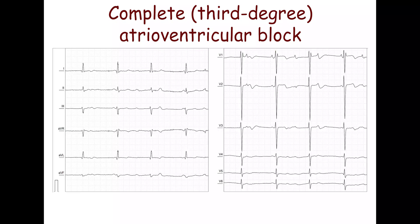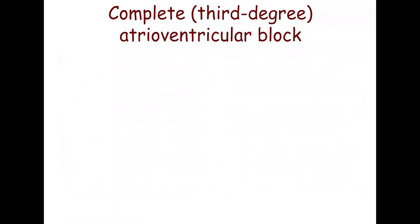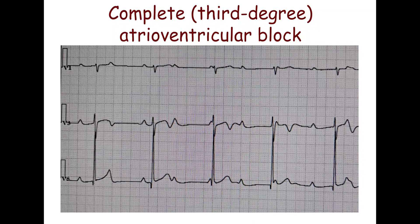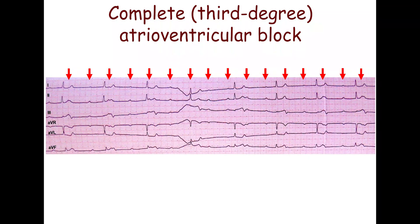Complete atrioventricular block, also called third-degree, is characterized by an absence of atrioventricular conduction, resulting in AV dissociation and independent atrial and ventricular rhythms — none of the supraventricular impulses are conducted to the ventricles. Either escape junctional rhythm, ventricular rhythm, or ventricular standstill may be present. Narrow QRS complexes of junctional origin indicate proximal AV block at the level of the AV node, while wide QRS complexes of ventricular origin suggest a distal block below the AV node, at the bundle of His or bundle branches.